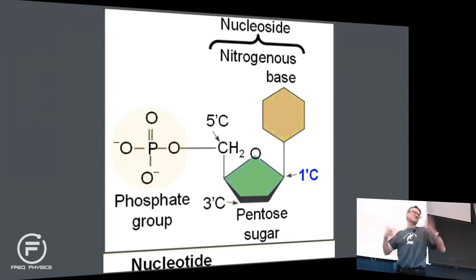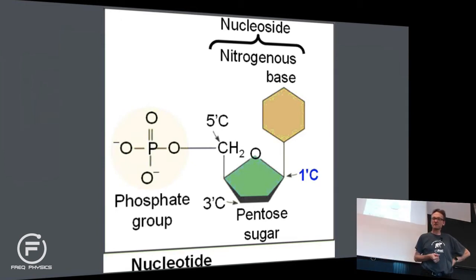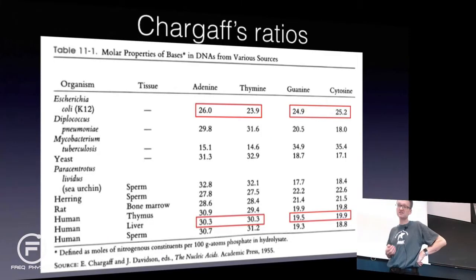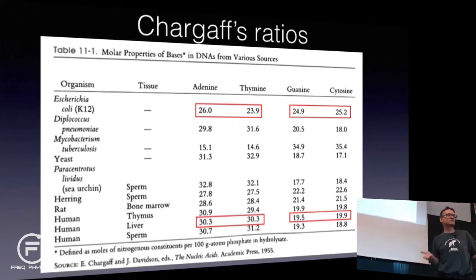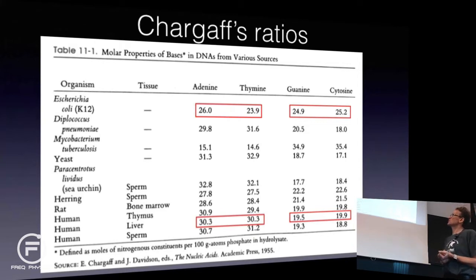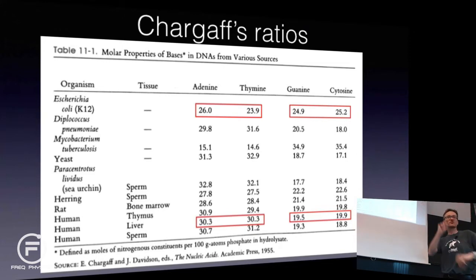During the many years people spent studying these nucleotides, Erwin Chargaff found very interesting results — that no matter what organism you have, adenine and thymine always occurred at roughly the same concentration, and guanine and cytosine roughly at the same concentration. The concentration varies, but they always occur in pairs.